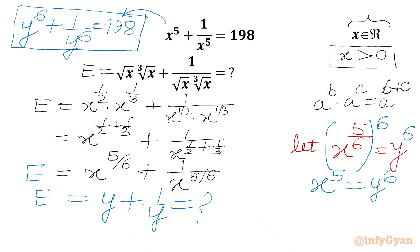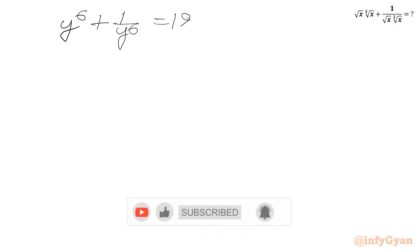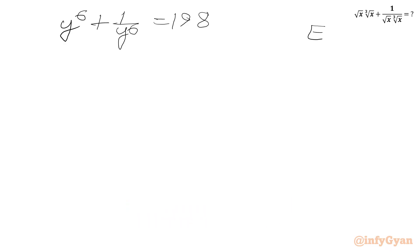Remember, once x is positive, y must also be positive. So for real x, y must be greater than 0. Our target is to find y + 1/y, and the known information is y^6 + 1/y^6 = 198.